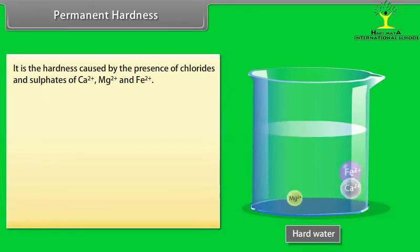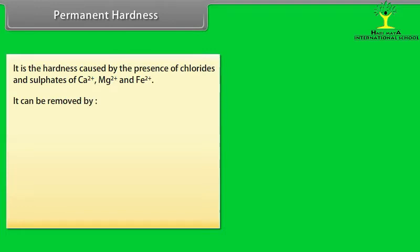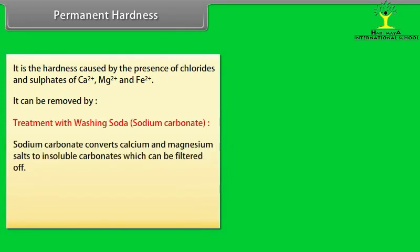Permanent hardness: It is the hardness caused by the presence of chlorides and sulfates of Ca2+, Mg2+, and Fe2+. It can be removed by treatment with washing soda or sodium carbonate. Sodium carbonate converts calcium and magnesium salts to insoluble carbonates which can be filtered off.